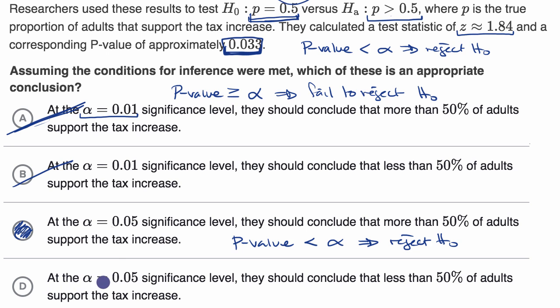And then choice D, at that same significance level, they should conclude that less than 50% of adults support the tax increase. No, not the situation at all. If we're rejecting our null hypothesis right over here, then it should suggest this alternative.